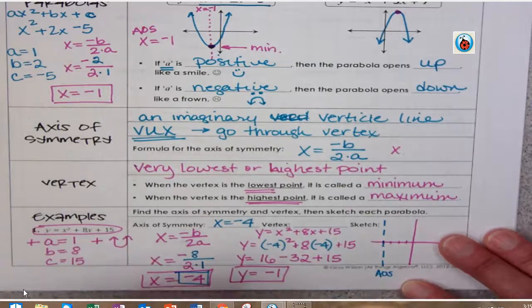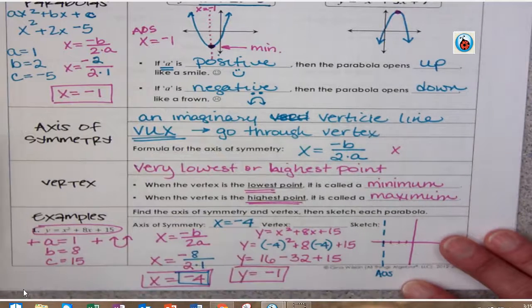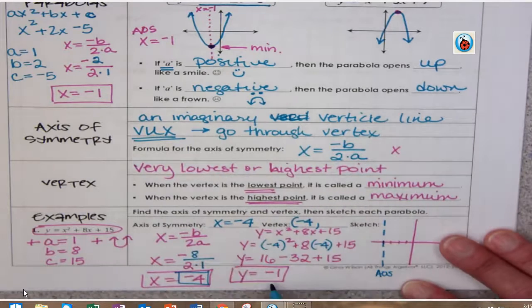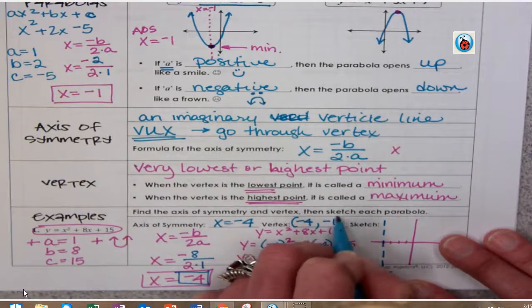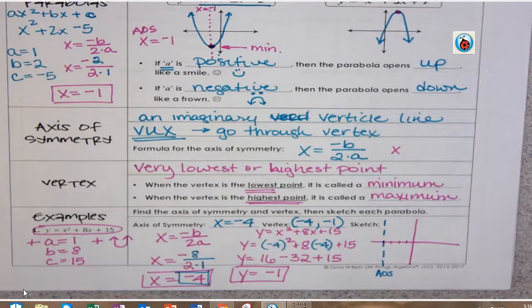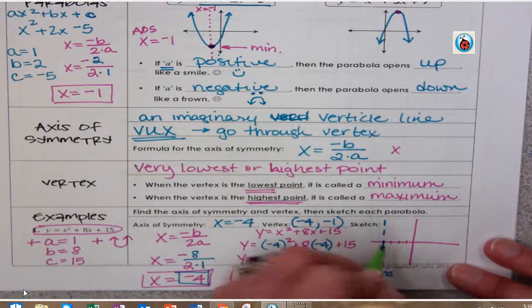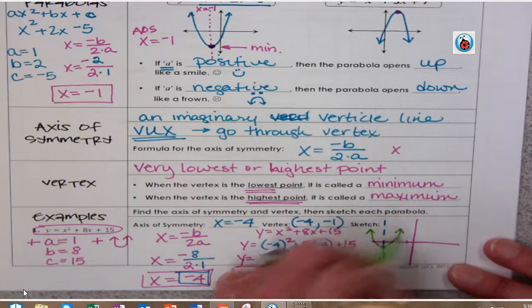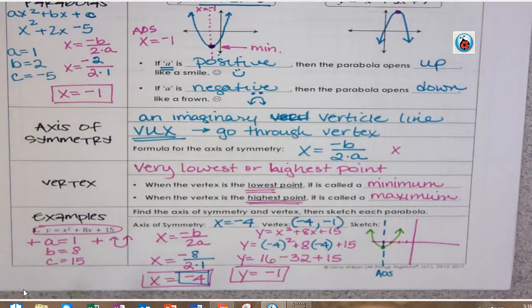I plug that in for my vertex. So in my vertex, my x value is going to be negative 4. My y value is going to be negative 1. So when I graph that, it's going to be negative 4, negative 1, about right here. And I know it's going to be facing up. Hopefully that helped.